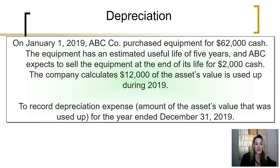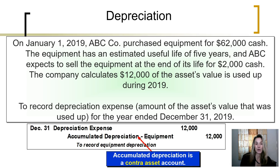For example, on January 1st of 2019, ABC Company purchases equipment and pays $62,000 in cash. They estimate the equipment will have a five-year useful life, and ABC expects to sell the equipment at the end of its life for $2,000 cash. The company calculates $12,000 of the asset's value as used up during 2019, using depreciation calculation formulas which will be examined at a later time. For now, we assume the amount of depreciation for the year is $12,000.